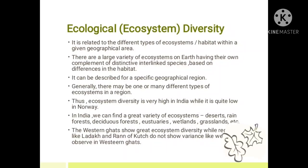Ecological diversity is related to different types of ecosystems or habitats within a given geographical area. There are a large variety of ecosystems on earth, each with their own complement of distinctive interlinked species based on differences in habitat. Generally there may be one or more different types of ecosystem in a region. Ecosystem diversity is very high in India while it is low in Norway.